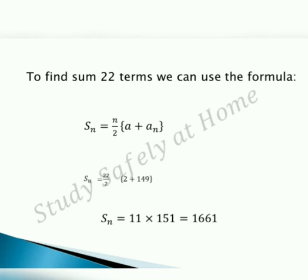So the sum of the first 22 terms is 1661.